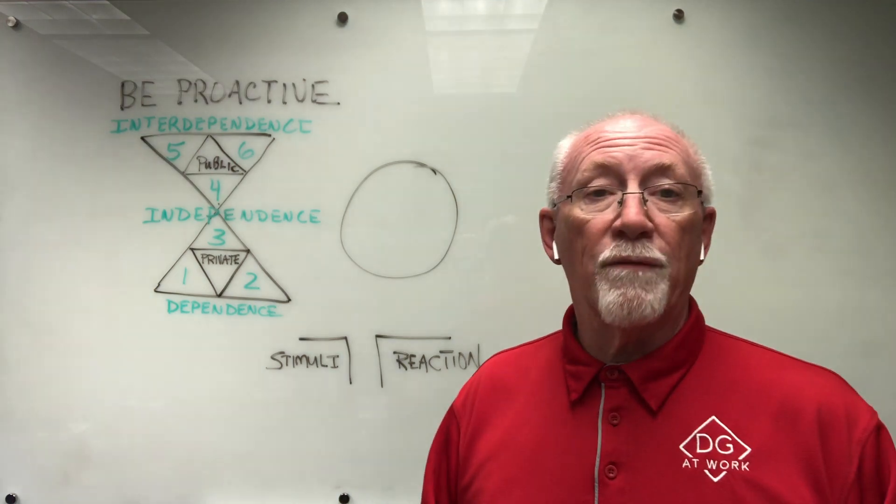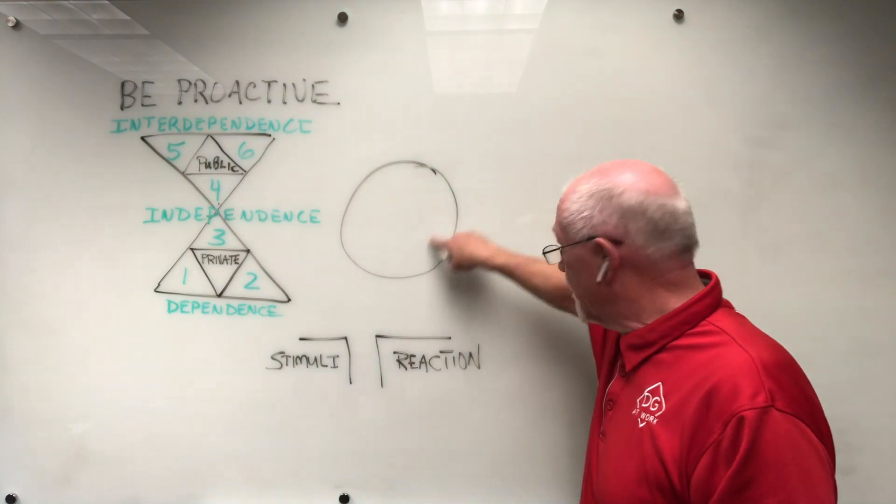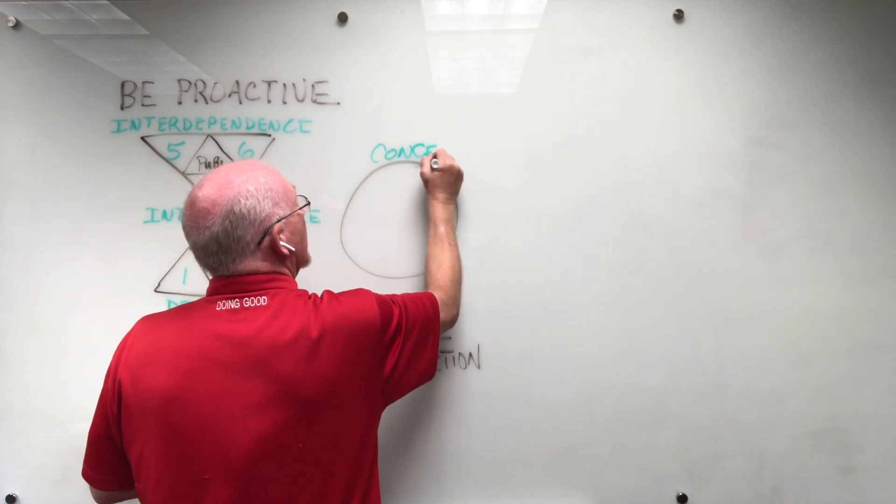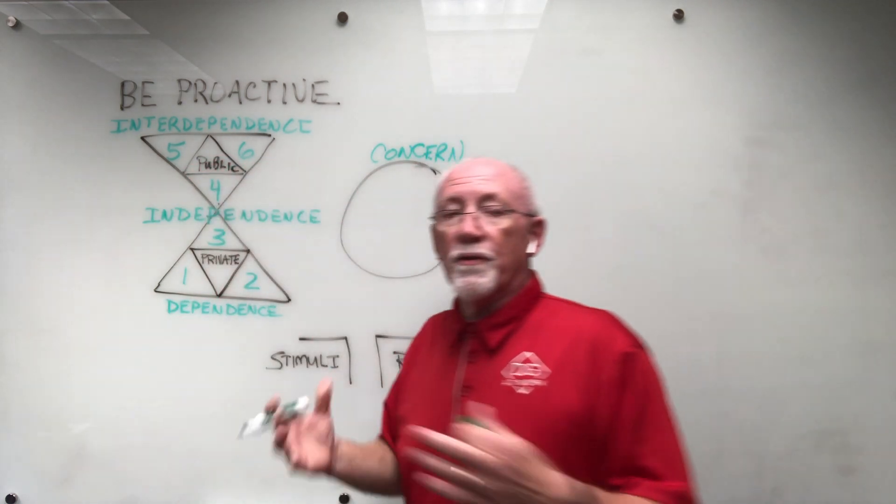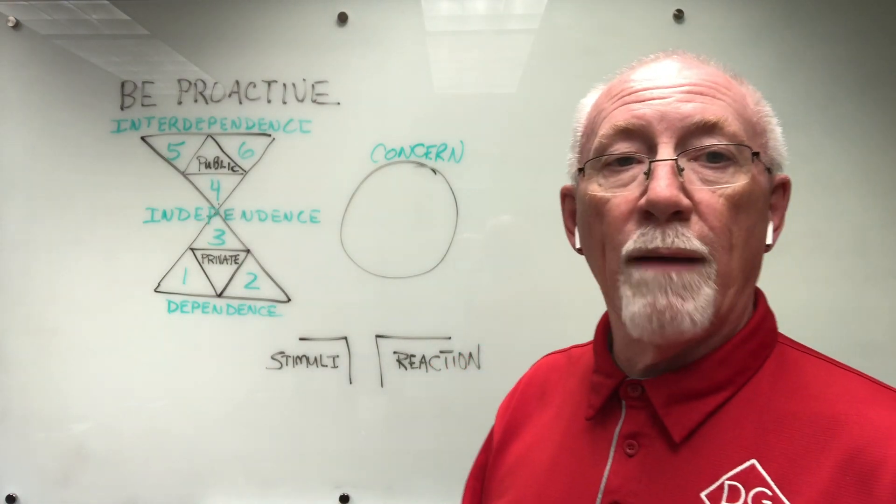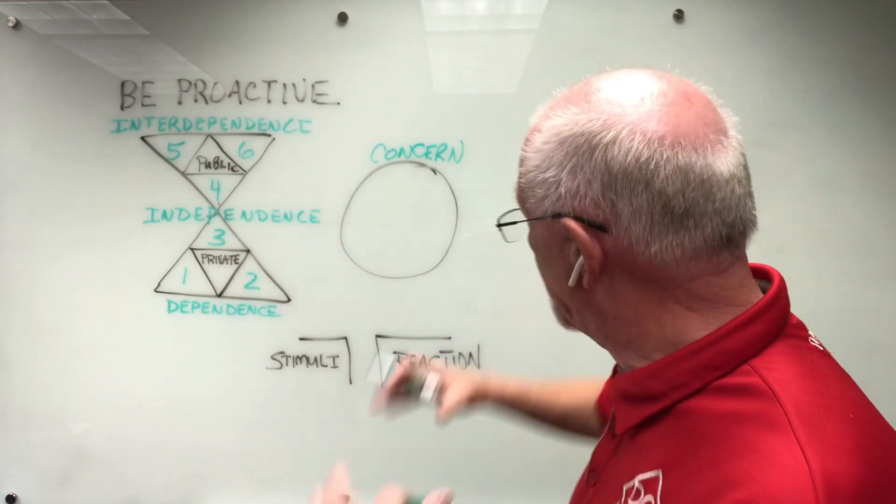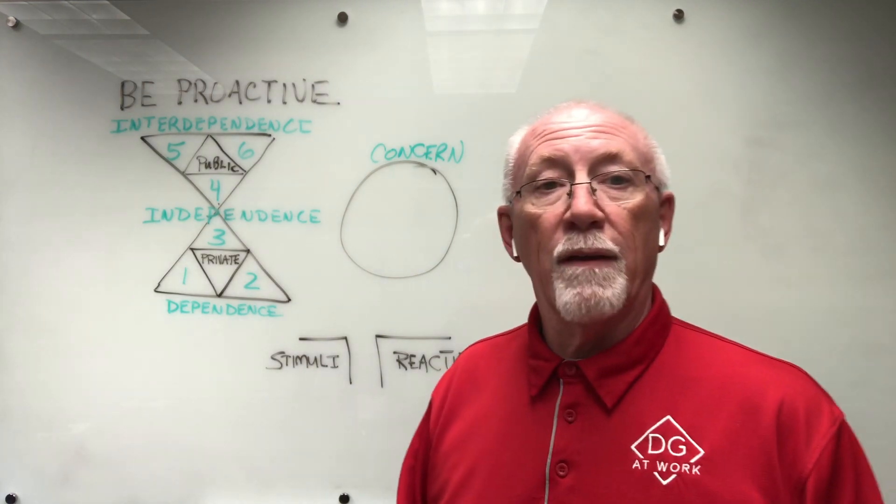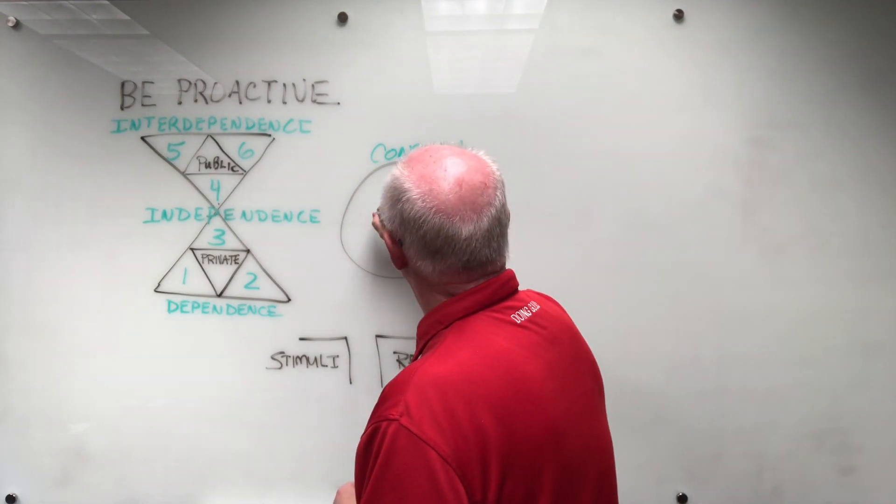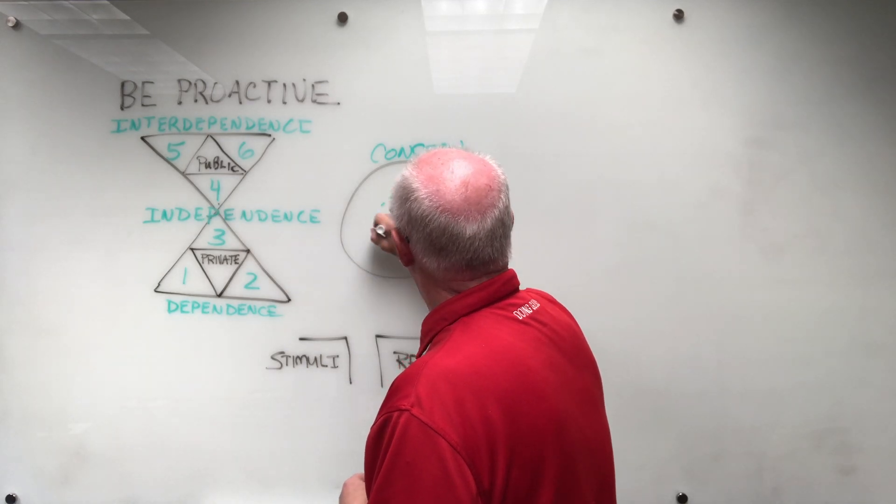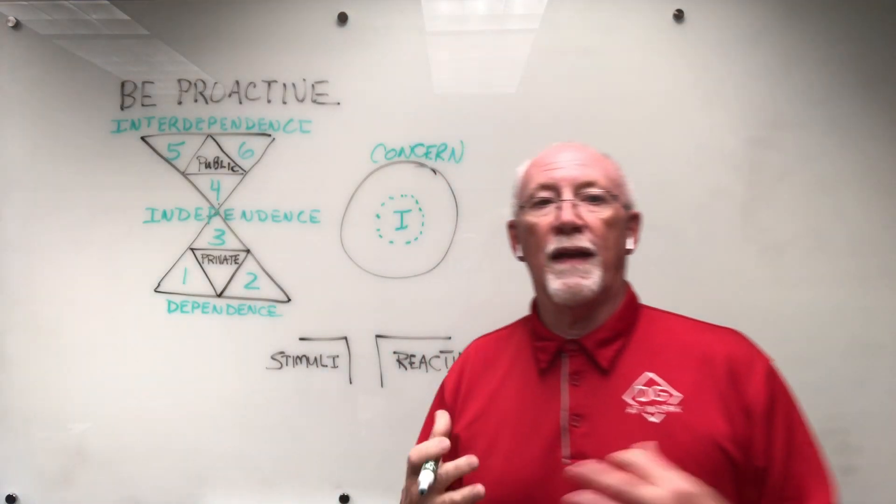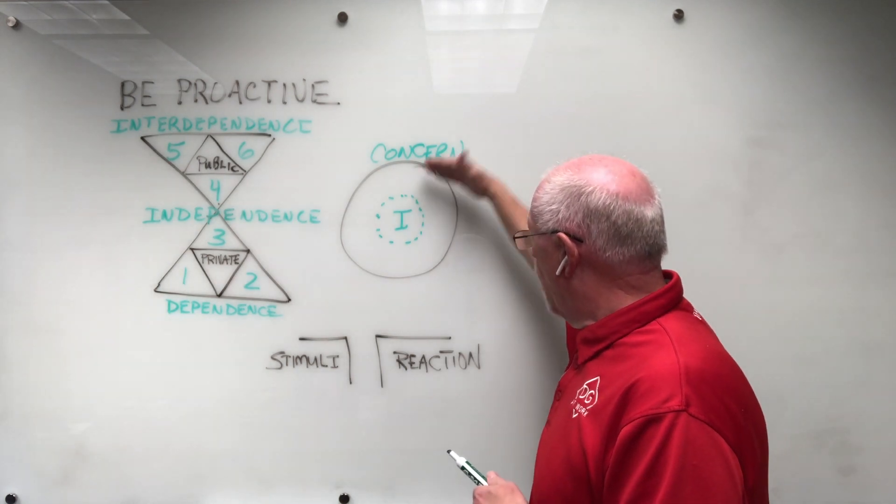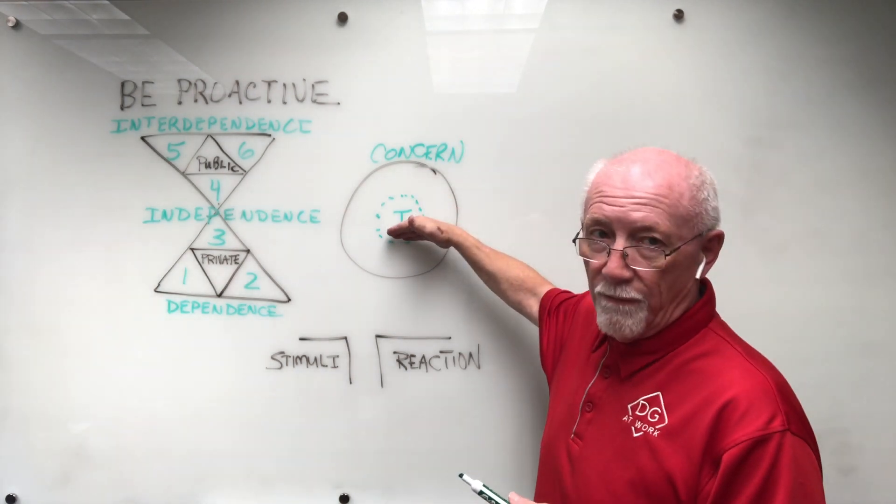One is the circle of influence. It starts with this circle—this is the circle of concerns. All the things in the world that concern me. Now, things that concern me, I may have no influence whatsoever over, so they're just concerns. And if I spend all my time here focusing on what concerns me, then I can't be very effective. He says what we need to do is focus on the inner circle, which is the circle of influence. Effective people are able to subdivide what concerns them into what they have influence over.